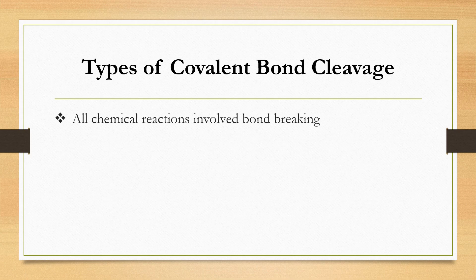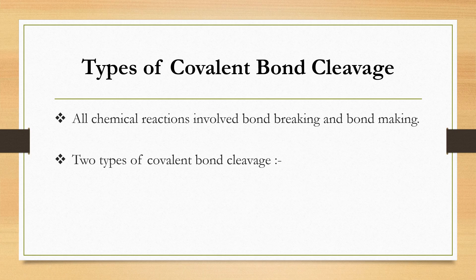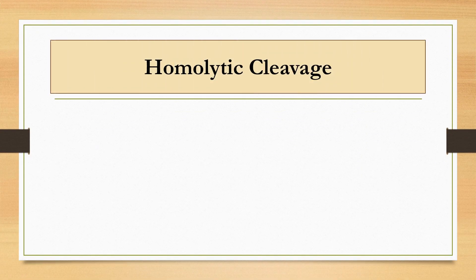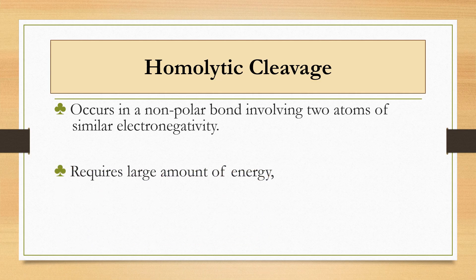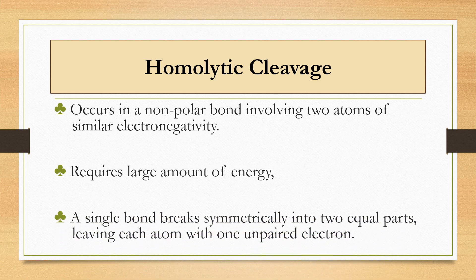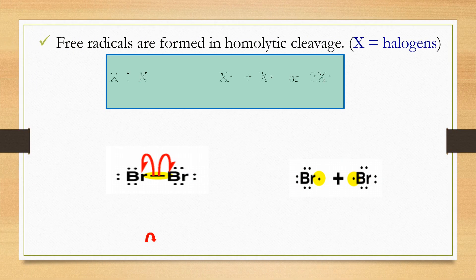There are two types of bond cleavage, as all chemical reactions involve bond breaking and bond making. The two types are homolytic cleavage and heterolytic cleavage. Homolytic cleavage occurs in a non-polar bond involving two atoms of similar electronegativity. It requires a large amount of energy, and the single bond breaks symmetrically into two equal parts, leaving each atom with one unpaired electron. Free radicals are formed in homolytic cleavage.